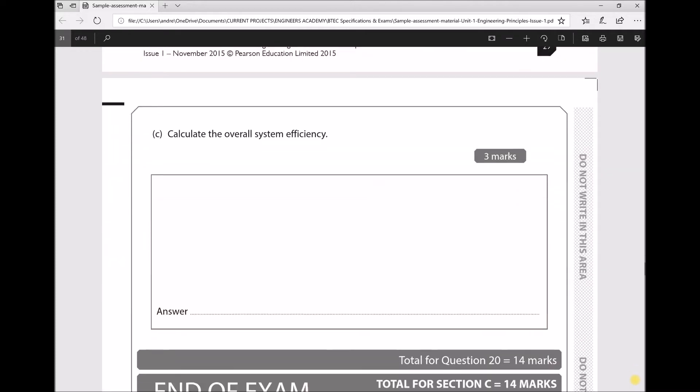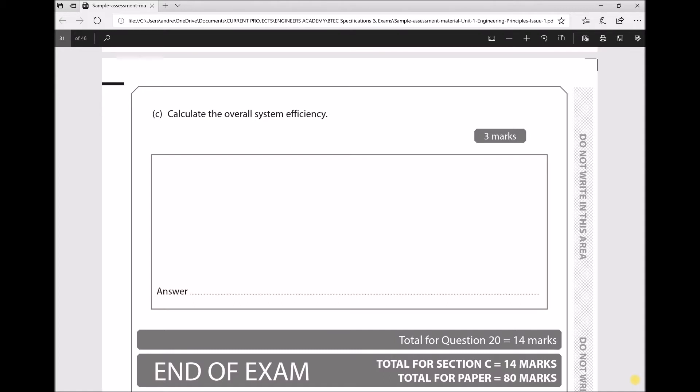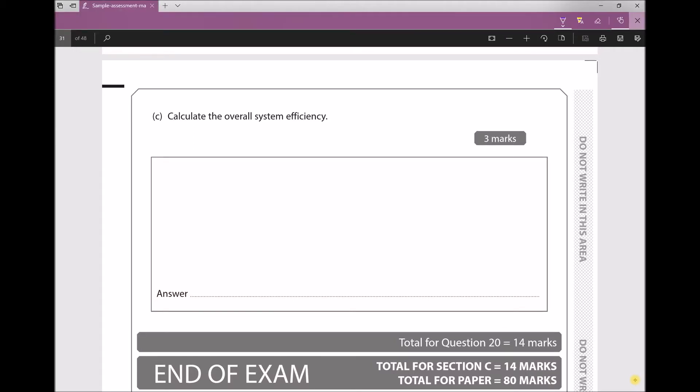The final part of the question asks us to calculate the overall system efficiency. Well, the purpose of this system, as we mentioned before, is to get electric energy from heat energy. So this time, our efficiency is our electrical power—I'll put P subscript E as a reminder that it's the electrical power—divided by the heat in. If you remember at the start, we said what we were trying to do was take as much of that heat energy as possible and convert it to electrical power.